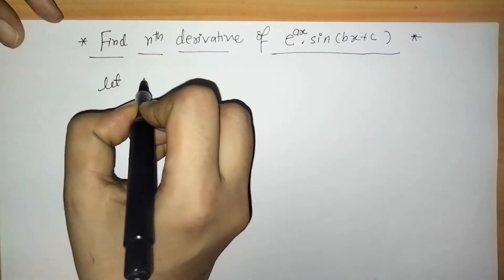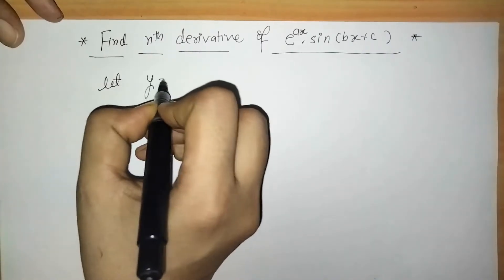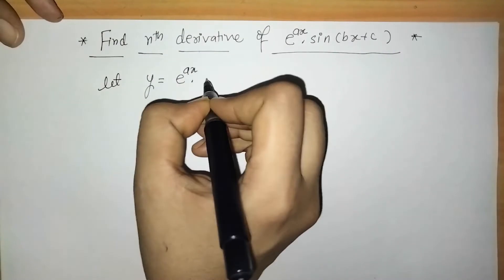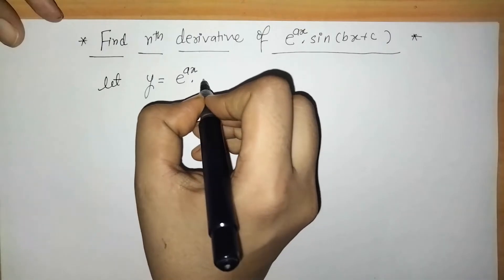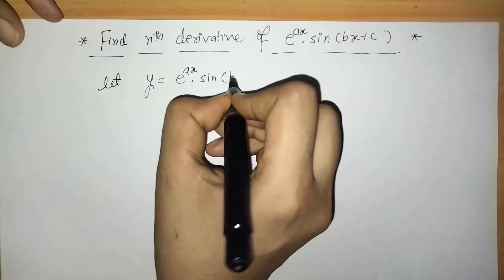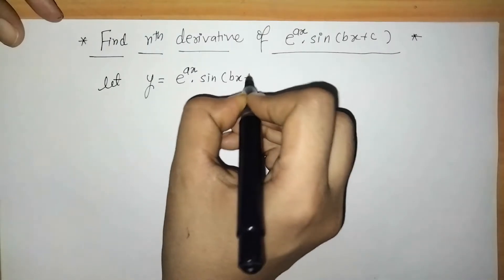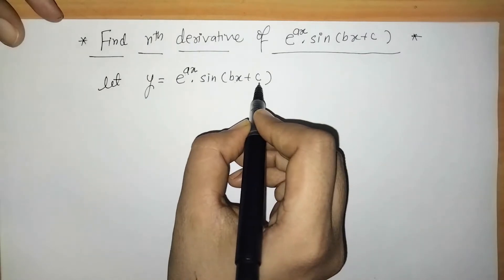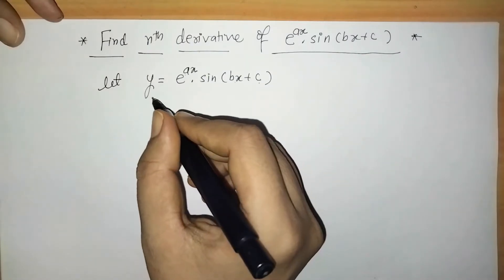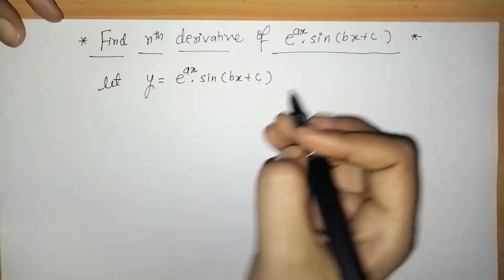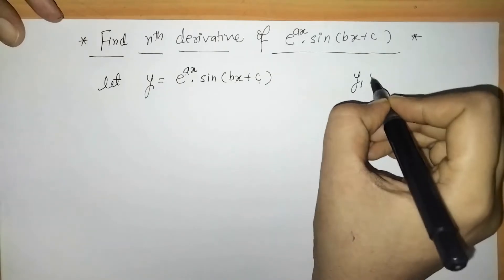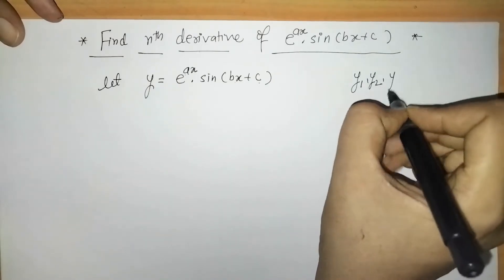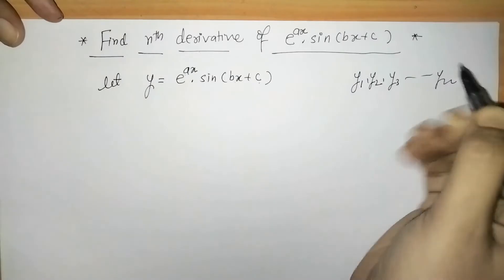So let us write here: y is equal to e raised to ax into sin of bx plus c, where a, b and c are constants. Here we have to find the nth derivative, that means we have to find y1, y2, y3 up to yn.